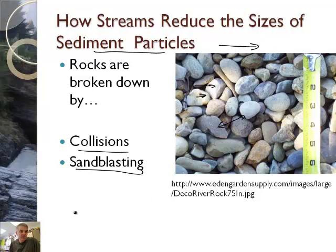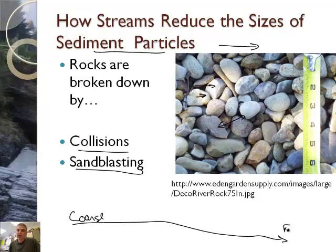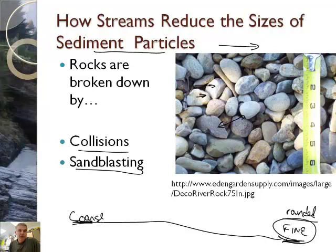What you find is coarse particles upstream and fine or more rounded particles downstream. Fine means smaller and coarse means larger, but also coarse particles tend to be rough and sharper, while downstream particles tend to be more rounded as you travel down a stream.